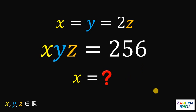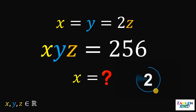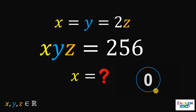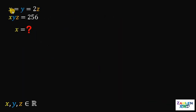You can pause this video if you want to give this problem a try. Now let's answer this question together. Given that x equals y equals 2z and x, y, z equals 256, our goal in this question is to solve for the value of x.